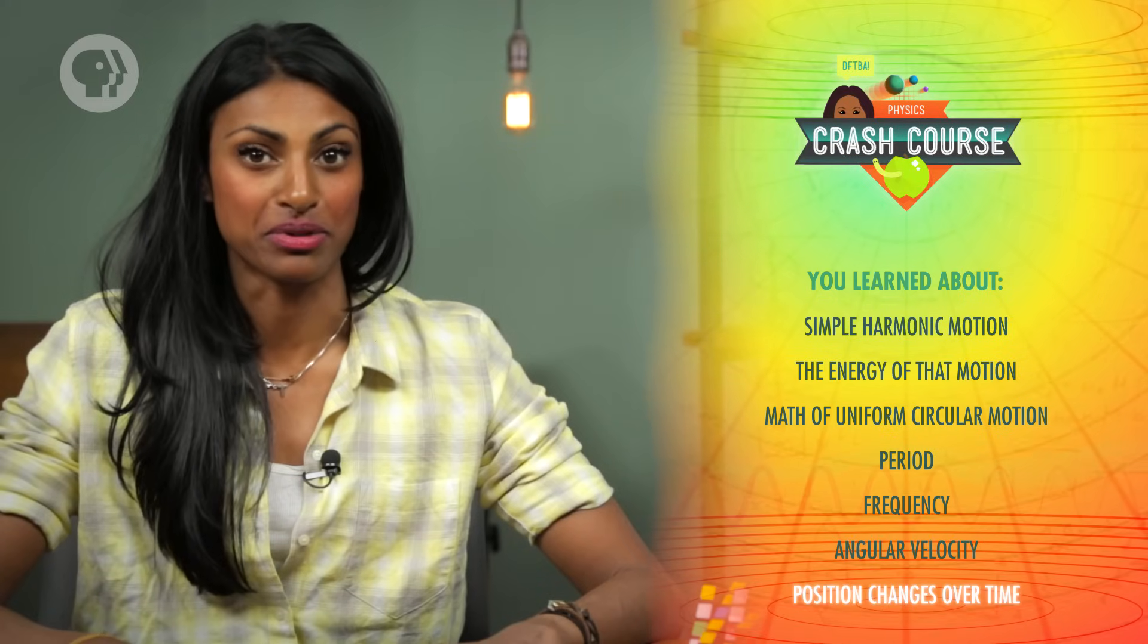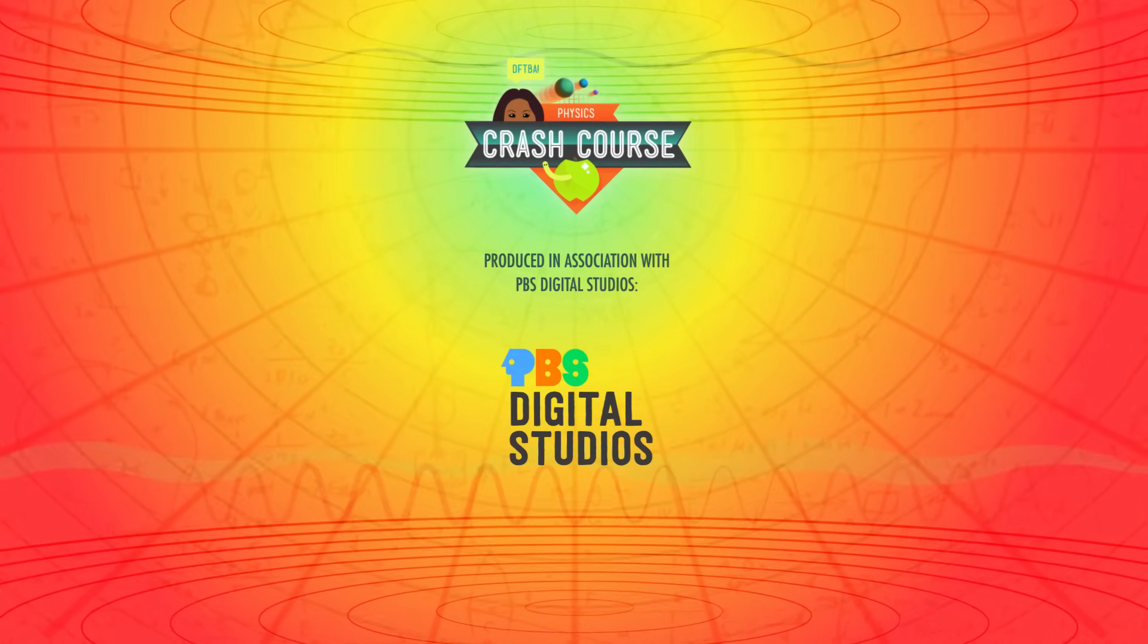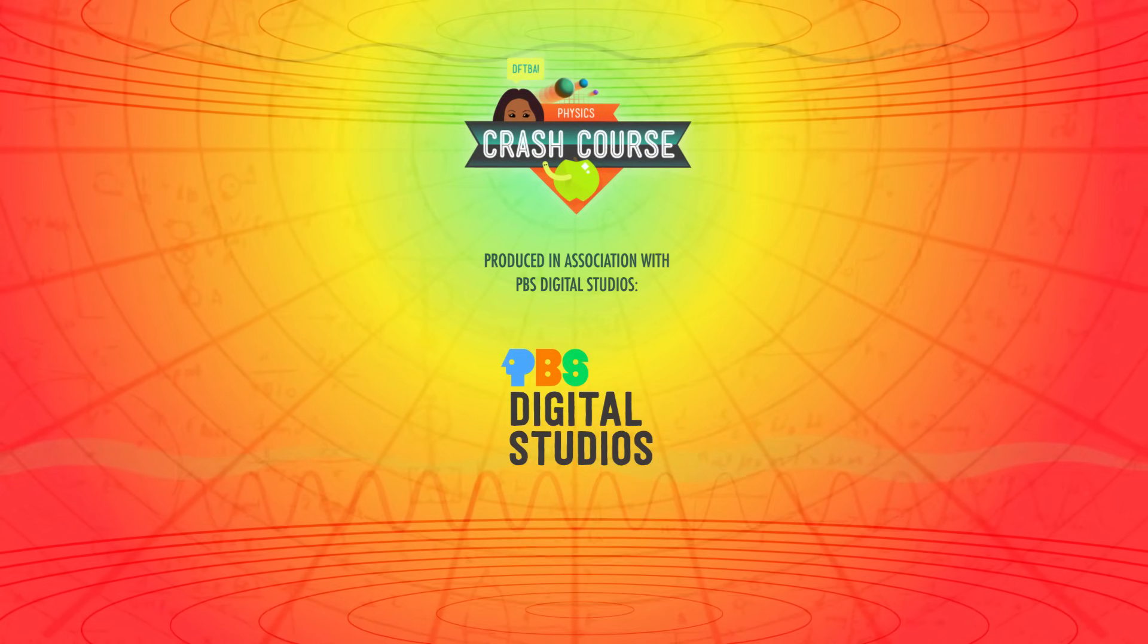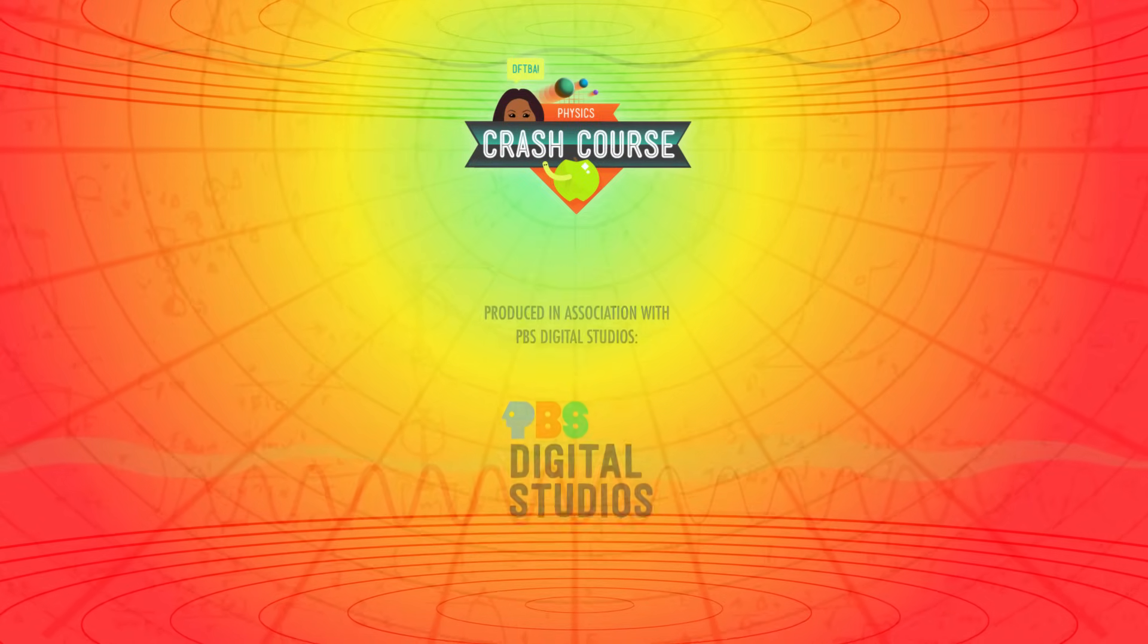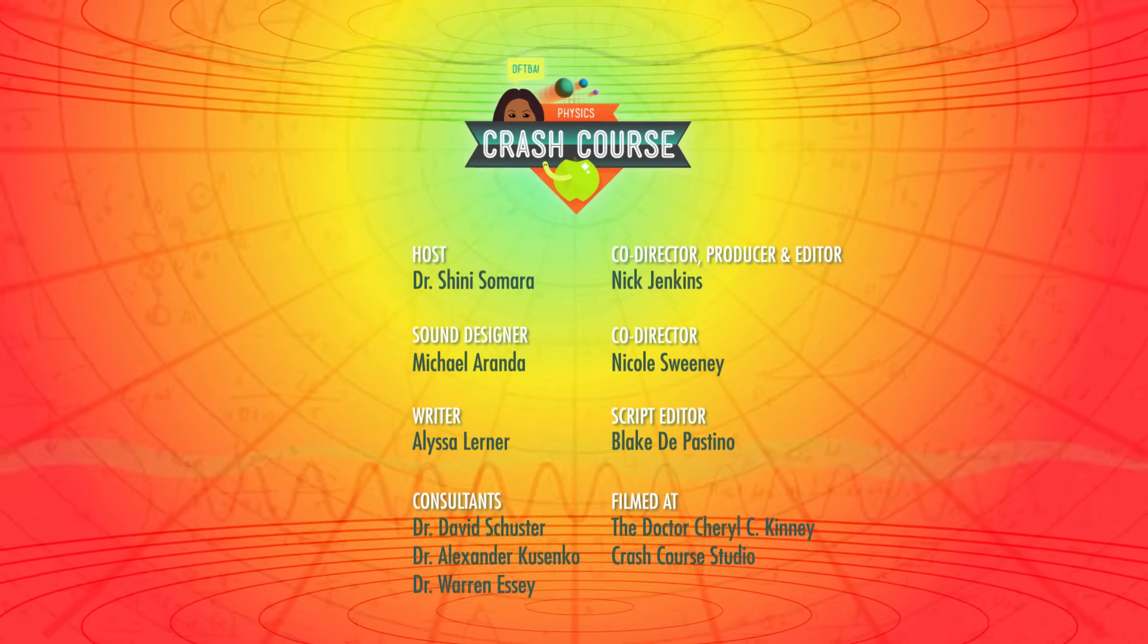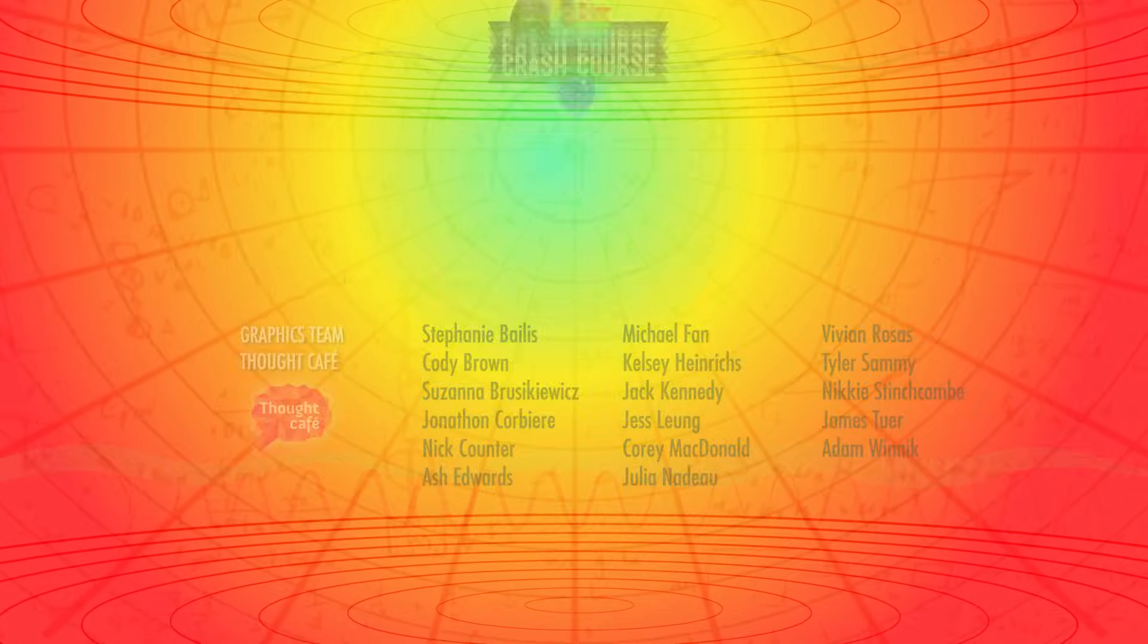We also described how the position of an object in simple harmonic motion changes over time. Crash Course Physics is produced in association with PBS Digital Studios. You can head over to their channel and check out a playlist of the latest episodes from shows like First Person, PBS Game Show, and The Good Stuff. This episode of Crash Course was filmed in the Dr. Cheryl C. Kinney Crash Course Studio, with the help of these amazing people. And our equally amazing graphics team is Thought Cafe.